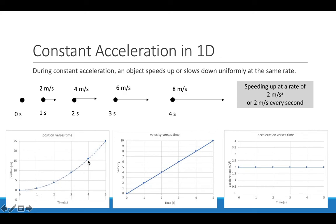Looking at the velocity graph for constant acceleration, the velocity starts at 0, then 2 after 1 second, 4 after 2 seconds, 6 after 3 seconds — increasing linearly. The acceleration versus time graph shows a constant value of 2 meters per second squared throughout. You should notice that the velocity graph has a constant slope, and that slope is actually the acceleration.